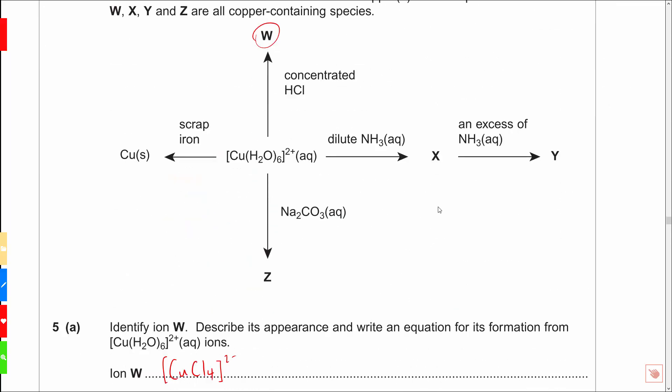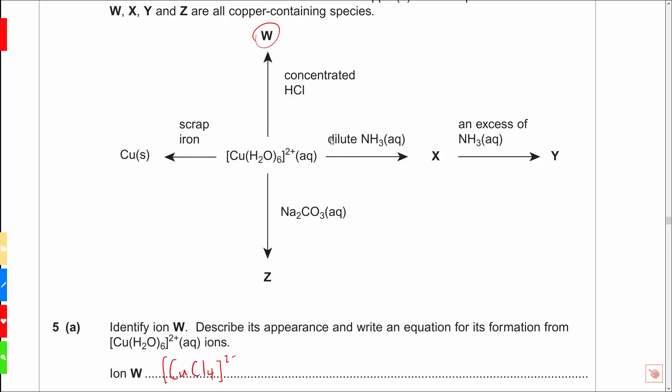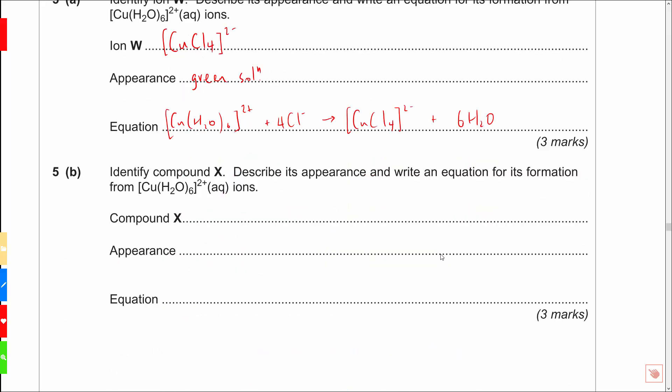Okay, 5B, identify compound X. So X describes its appearance again. Write an equation for its formation. So, we're adding this time dilute NH3. So, we're adding NH3. So, the compound is going to be [Cu(H2O)4(OH)2]. No charge there, no square brackets required. Appearance, this guy is a blue precipitate. And it's going to be an equation-wise exactly like I wrote previously. Reacting this time, make sure it's the ammonia you add in. It's going to be 2. And we're going to produce, obviously, the [Cu(H2O)4(OH)2] plus 2NH4+. Nice and simple. Make sure everything there balances and all the charges are correct on the complexes.